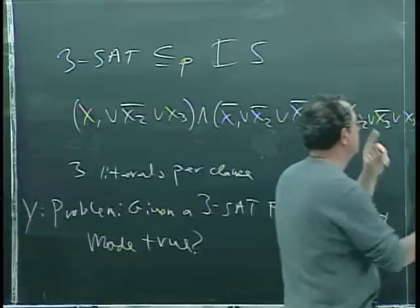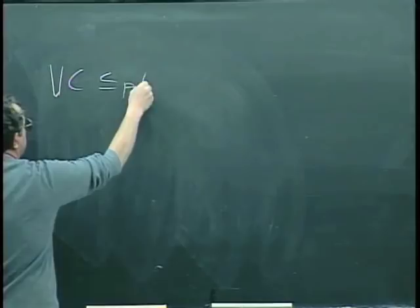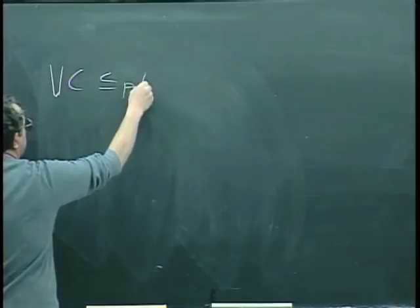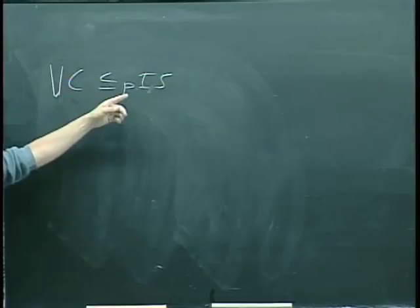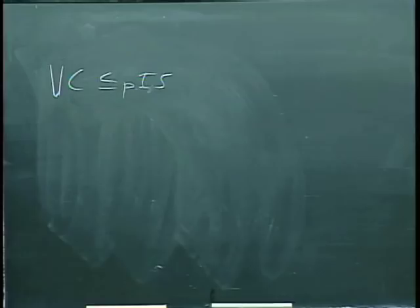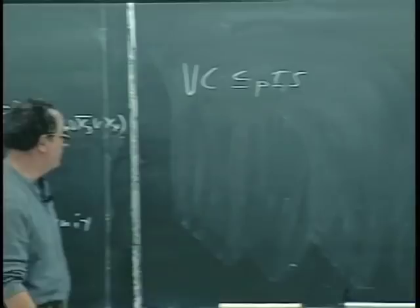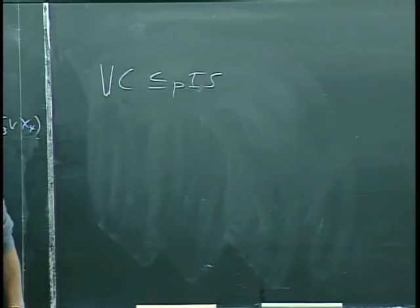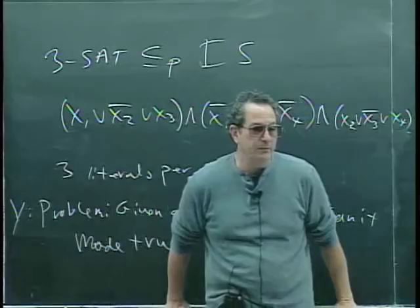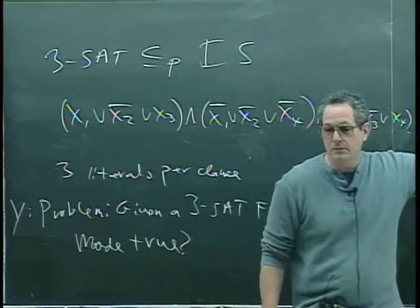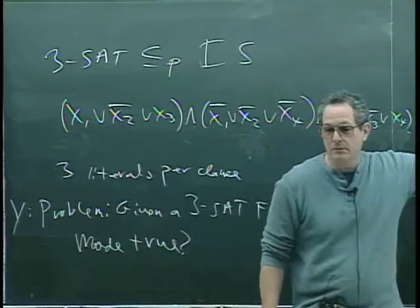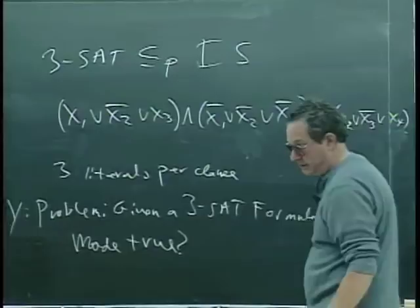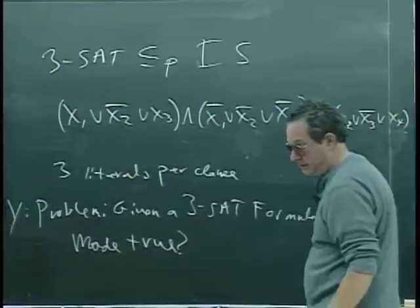The definition of reduction allows a polynomial number of calls to the black box. But in the actual vertex cover to independent set reduction we did last time, we only made one call. One is a constant, so that's certainly bounded by a polynomial. Most reductions we know only make one call. That's what's going to happen in the 3SAT reducing to independent set. I'll show you the idea of the reduction on this particular example.